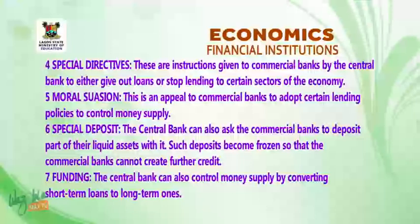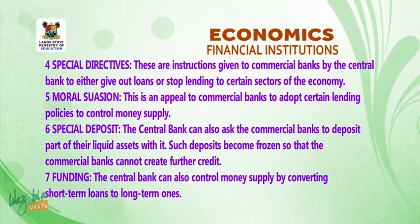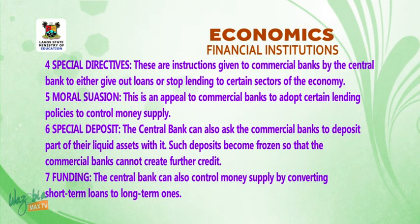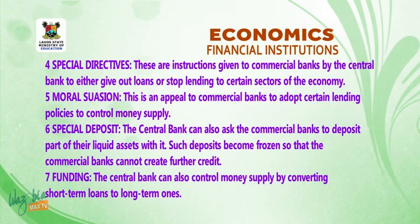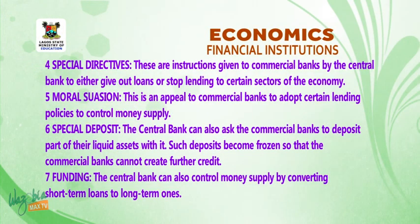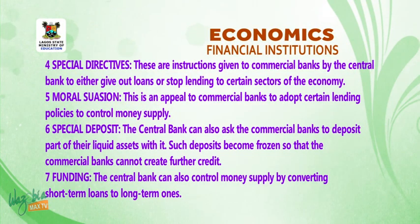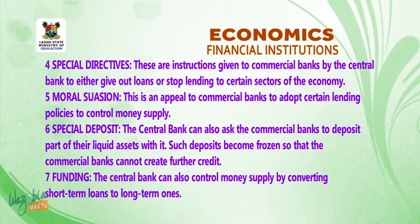4. Special directives — these are instructions given to commercial banks by the central bank to either give out loans to or stop lending to certain sectors of the economy. 5. Moral suasion — this is an appeal to commercial banks to adopt certain lending policies to control money supply. 6. Special deposits — the central bank can ask commercial banks to deposit part of their liquid assets with it; such deposits become frozen so that commercial banks cannot create further credit.